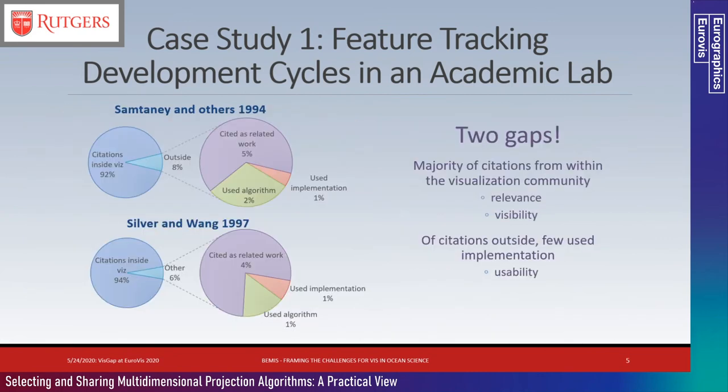Limited overlap of graduate students and lack of documentation are ongoing issues, but what really drives the lab is the need to keep finding novel projects that can be published. This limits the time and focus on maintenance and mature implementations. Since publications drive the lab's efforts, it is worth looking at who reads and uses these publications. Most citations are from within the visualization community. Even when domain scientists did cite these papers, they usually did not use the actual algorithms. The only uses of implementations found were from a small number of direct collaborators.